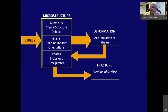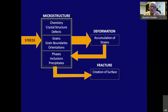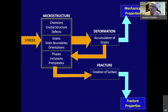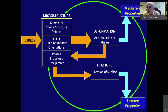In our lab at CSIR NML, we have always been intrigued by the effect microstructure has when a stress is applied to it. We know it's a continuous process of deformation, which results in the accumulation of strain, which interacts with the microstructure and ultimately creates surfaces to create a fracture. We get the mechanical properties from the deformation end and the fracture properties from the fracturing, and all of these are correlated and interrelated.